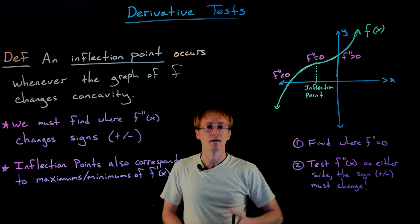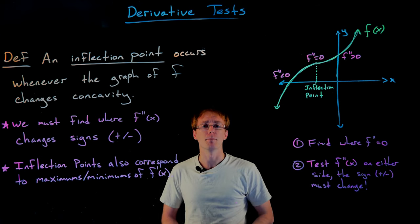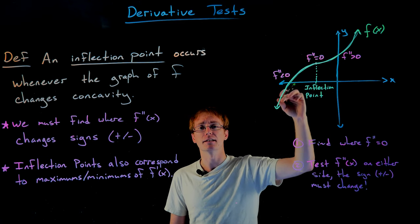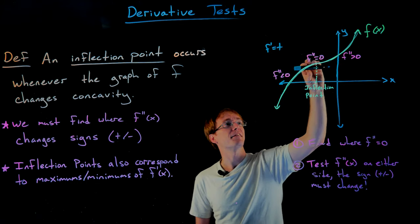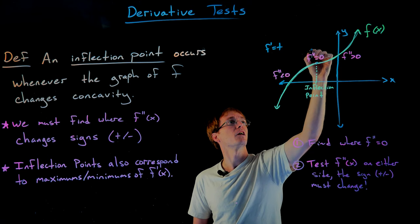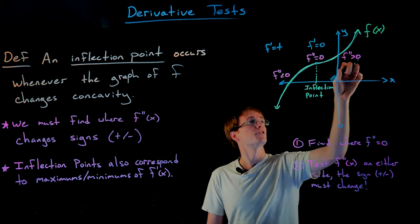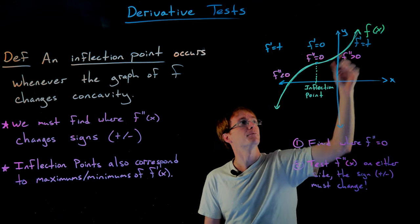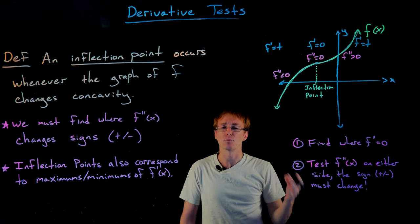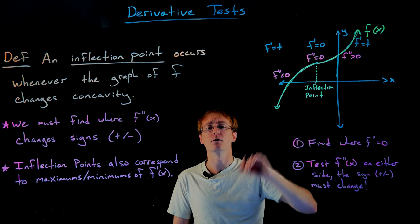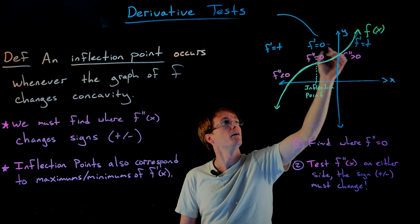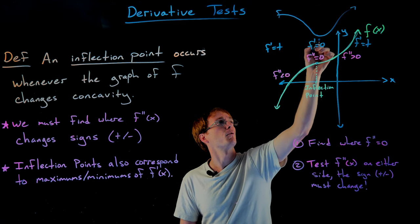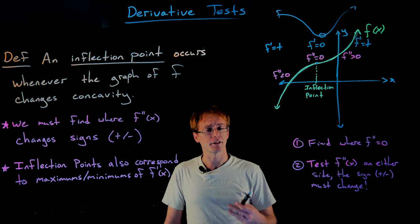If we do some analysis on the graph of our green function f of x, we should see that the inflection point really does correspond to a maximum or minimum of the first derivative. To the left of our inflection point the function is increasing, so its first derivative is always positive. At the inflection point itself we have a horizontal tangent line, so f prime equals zero. To the right, the function returns to increasing, so f prime goes back to positive values. The graph of our first derivative — the little blue sketch — shows some positive value going down to zero and then back up, meaning the inflection point corresponds to a local minimum of f prime.